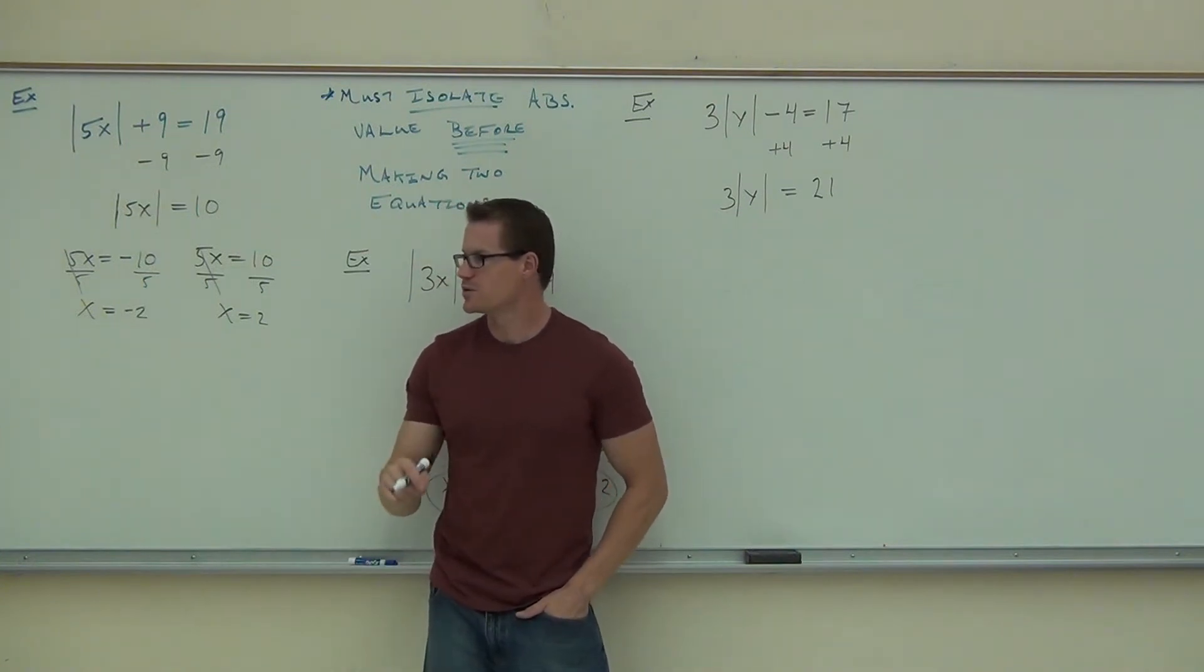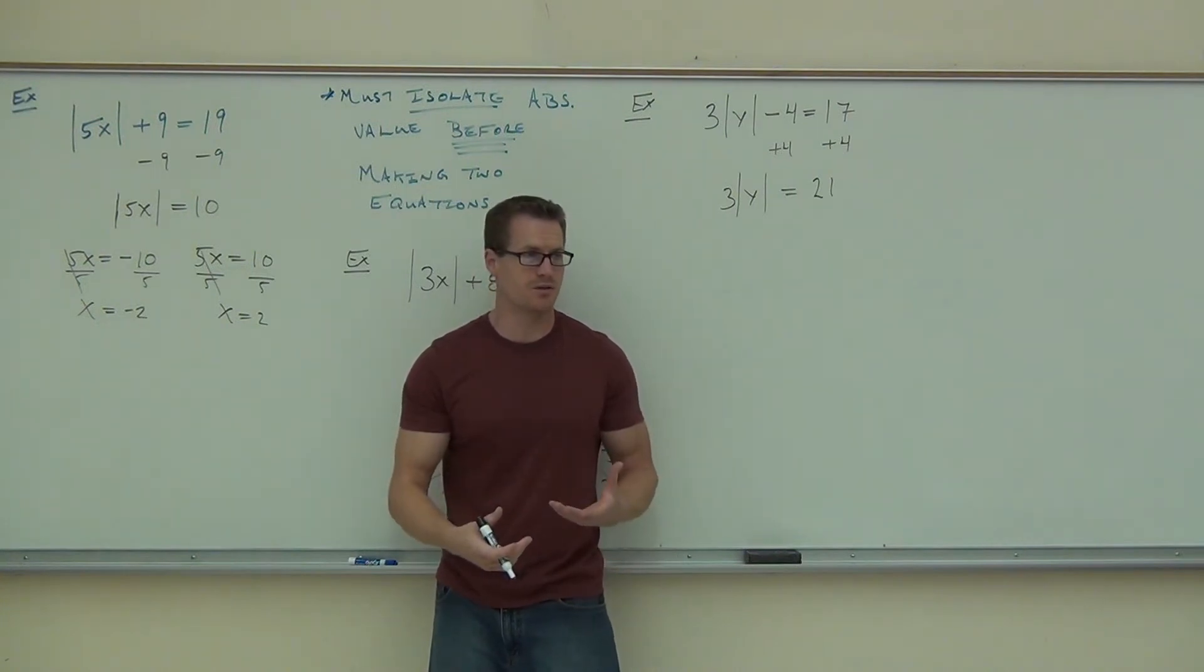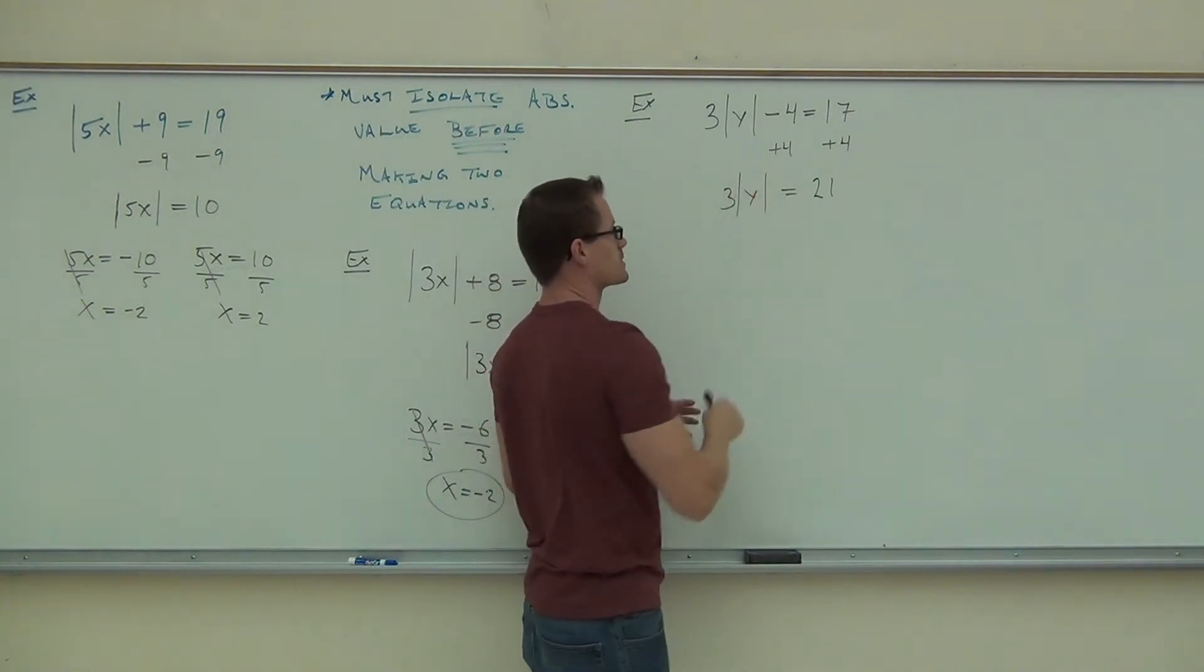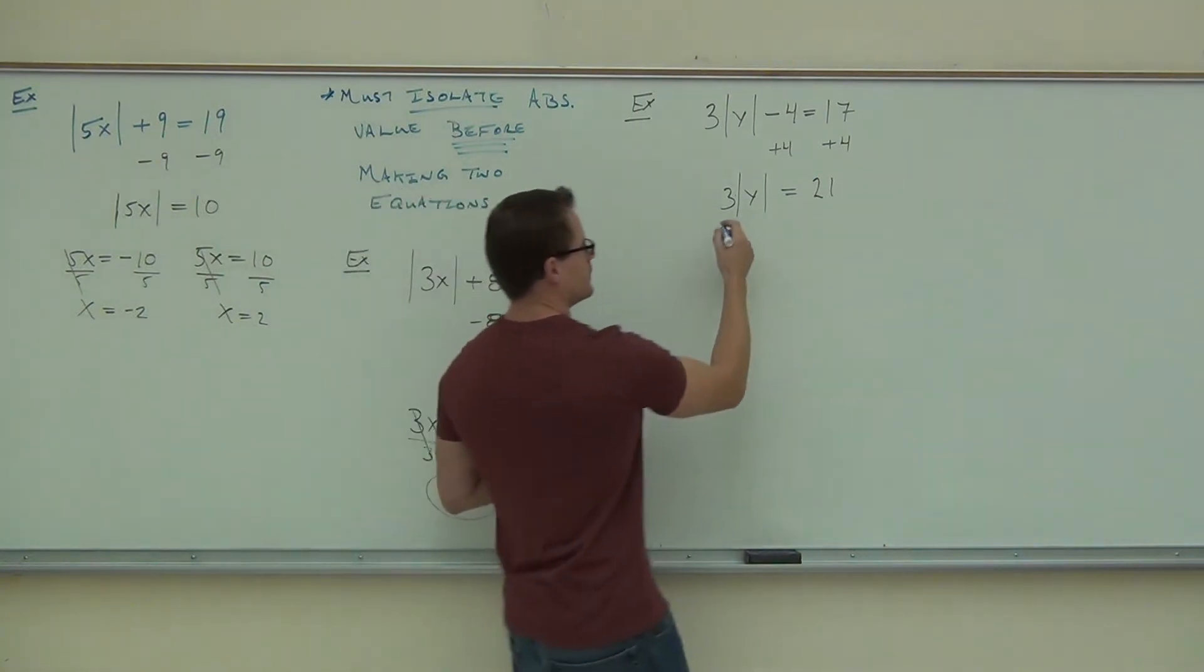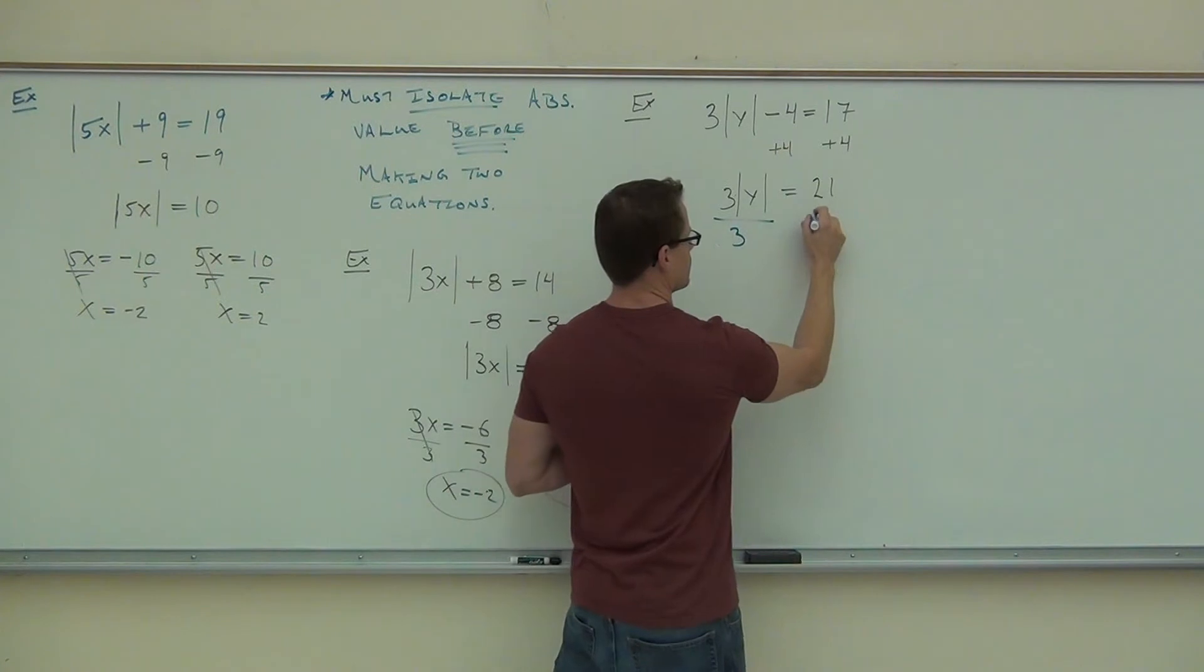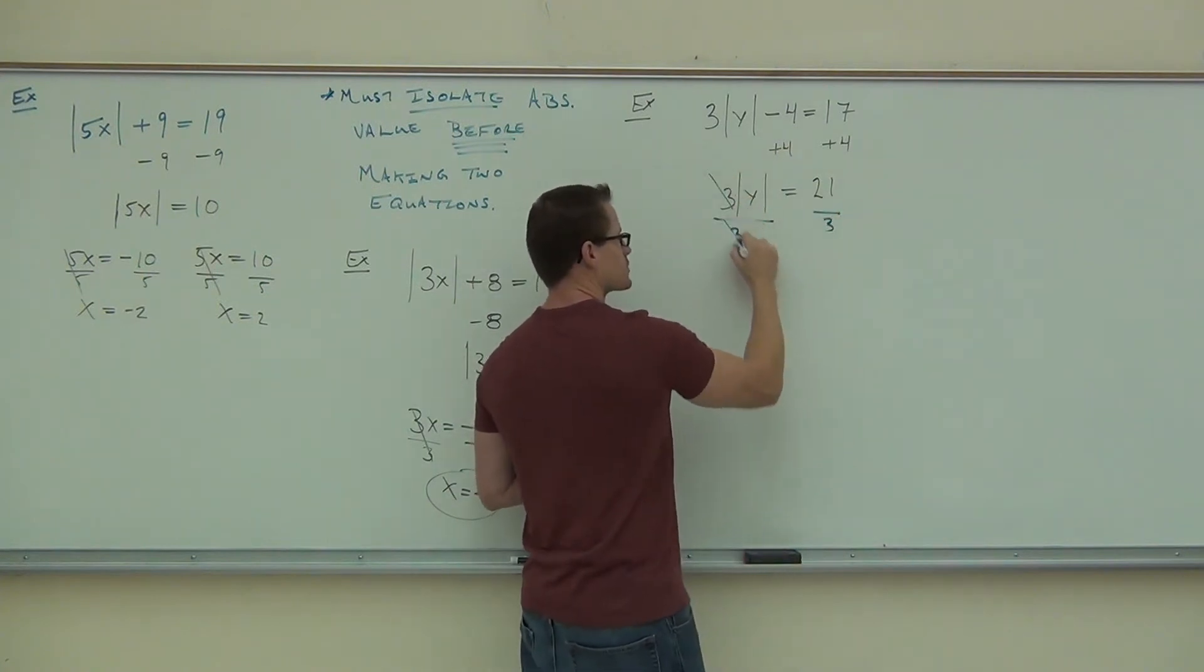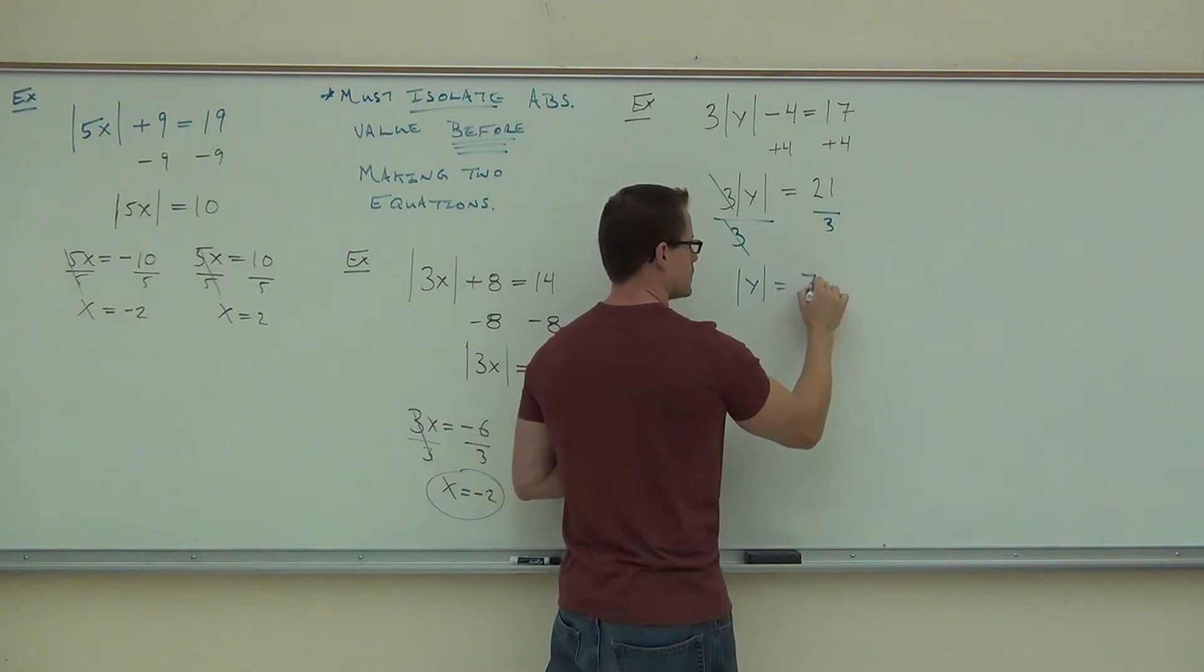You're not even going to make up two equations yet. From here, we're going to divide by 3 and get the absolute value completely by itself. So since this is 3 times the absolute value of y, let's take care of that. If we divide by 3, yes, those 3's are gone, I get the absolute value of y equals 7.